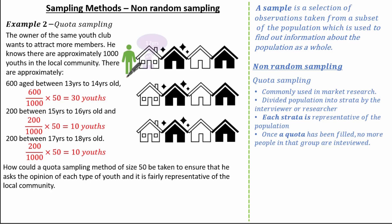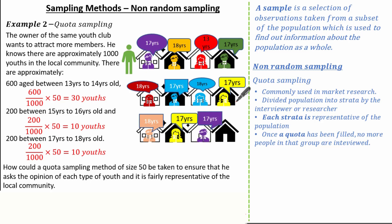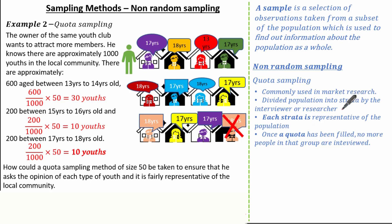Our researcher will go round the houses and ask the opinion of youths in the local community, asking their age and opinion, ensuring to keep to the designated sample number of each quota. In this example, we have now reached the quota of 17 to 18 year olds, so we now ignore the responses of people aged 17 to 18 as the quota is full. When looking at quota sampling: it's used commonly in market research, we divide the population into strata representative of the population, and once a quota has been filled, no more people in that group are interviewed.